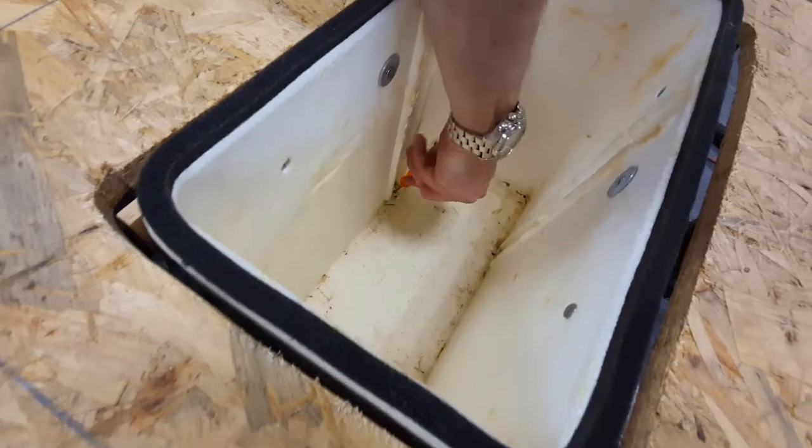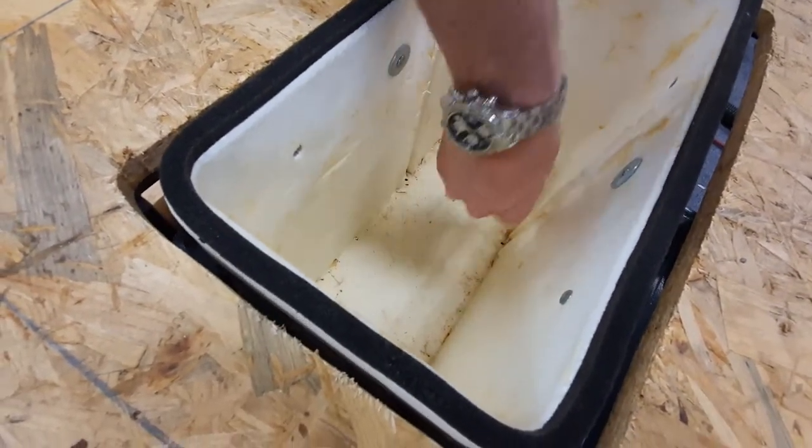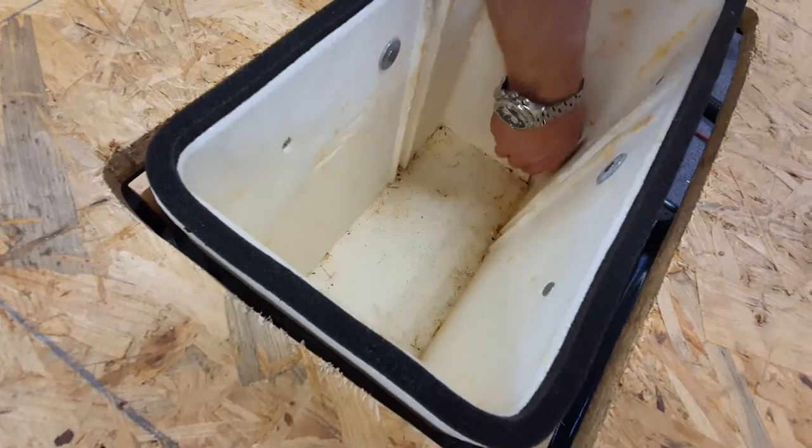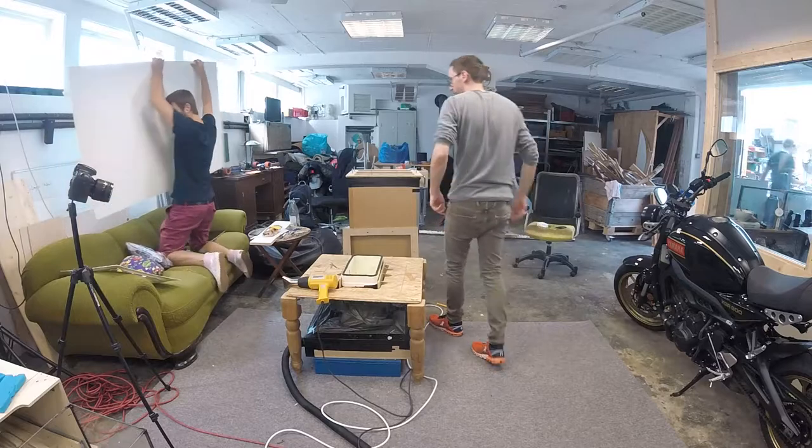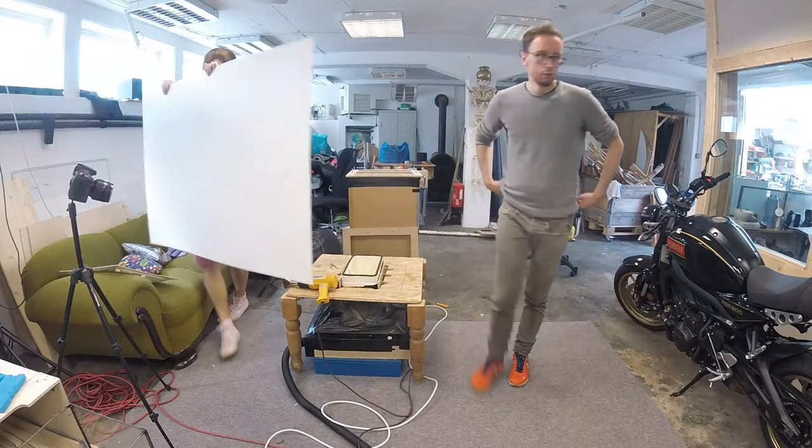For the holes in the inlay we just use the screwdriver to punch some holes into the styrofoam. The plastic sheet is made from polystyrene, which is industry standard for vacuum molding and also rated as food-grade plastic.